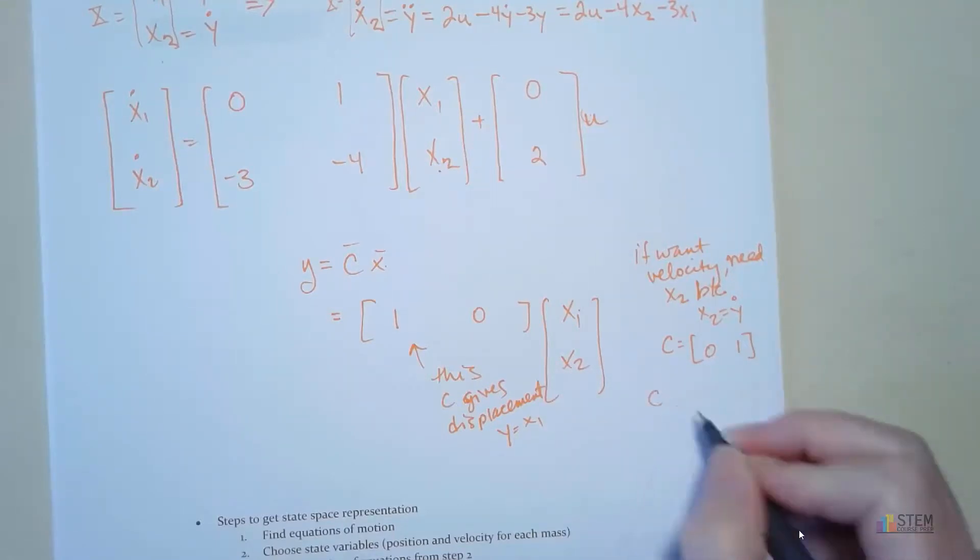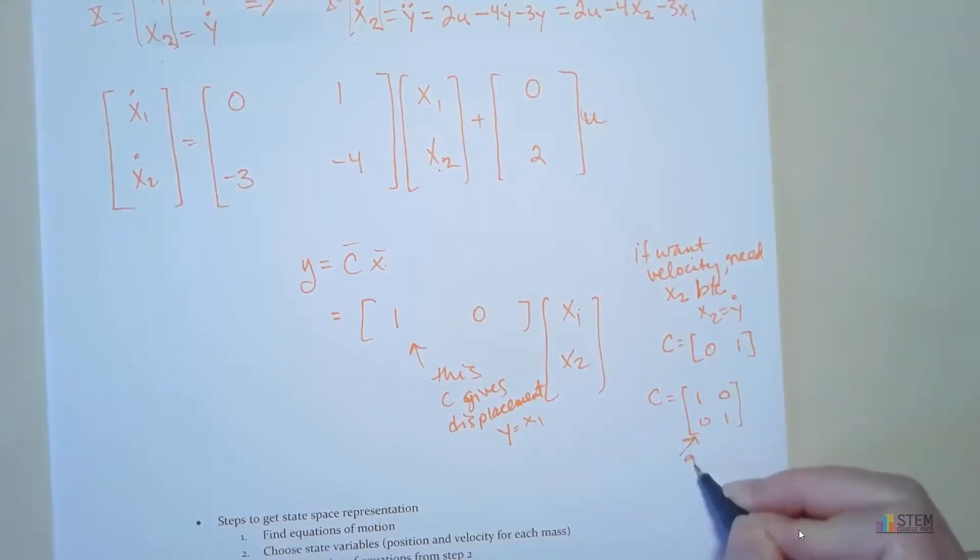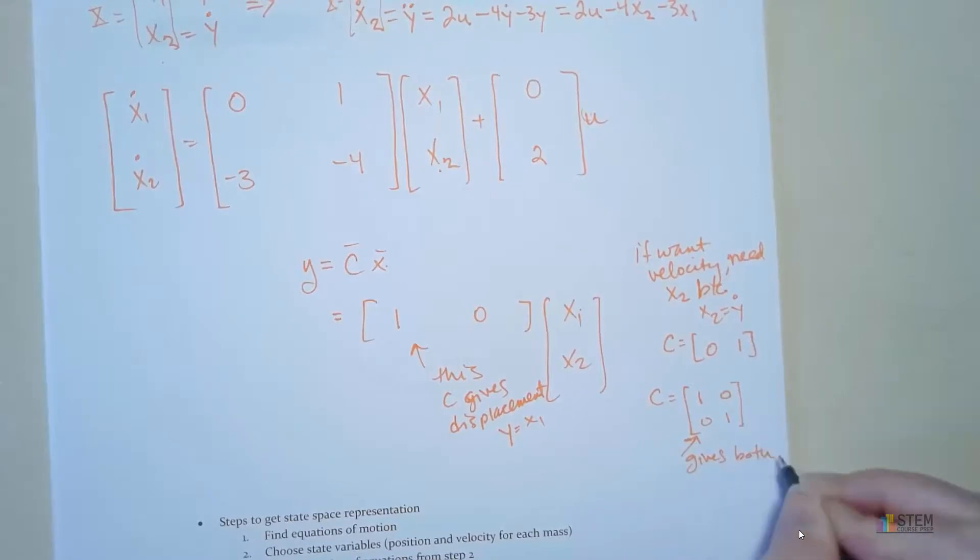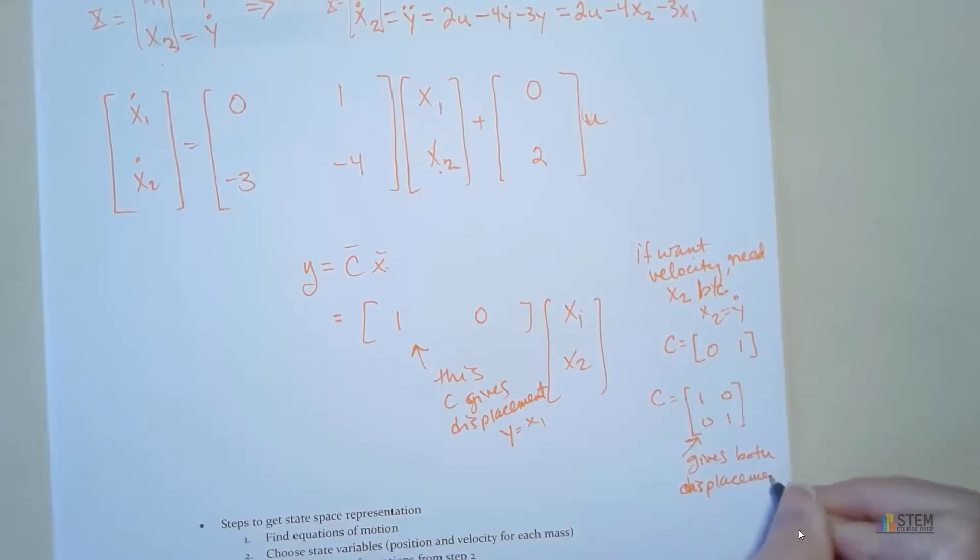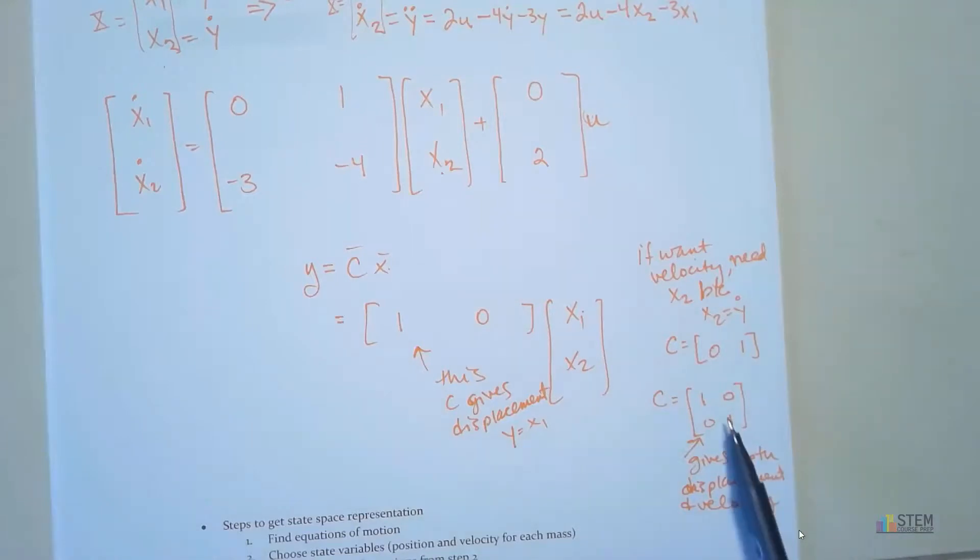And then finally, let's say you want both of these. So if you wanted both, you would have two rows. You'd have 1 and 0 and then 0 and 1. So this gives both the displacement and velocity. Because you're going to end up with x1 and x2. And both of those, one represents displacement, one represents velocity. So the C matrix tends to be the thing that confuses students the most.